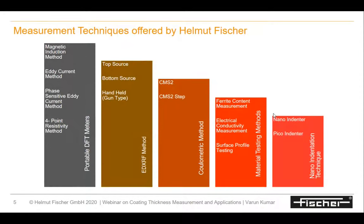When it comes to Fisher, we have five methods of thickness measurement. The first is portable DFT meters — the normal DFT meters used extensively in all industries for paint thickness measurement. There are different principles and we will give a small overview of each. The second is EDXRF, which is for electroplated components — a completely non-destructive test that helps in determining multi-layer plating thickness, material composition analysis, and plating analysis.